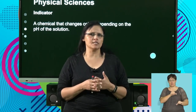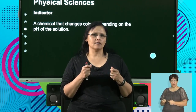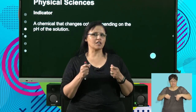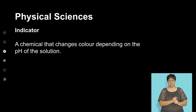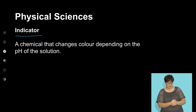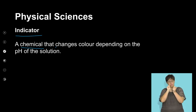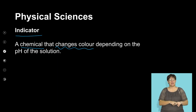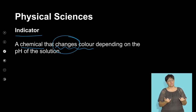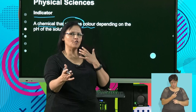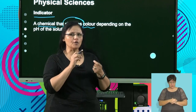For us to do a titration, how will we know what's the endpoint? How will we know this is now the product? For acid-base reactions, we use chemicals to show us that there is now a neutralization. Those chemicals that we use are called indicators, and an indicator is a chemical that changes its color depending on the pH of the solution.